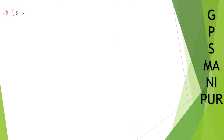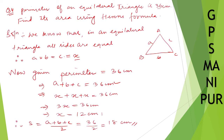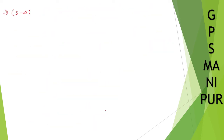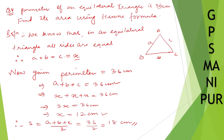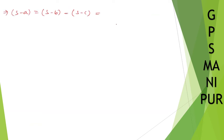Next we find s minus a, s minus b, and s minus c. Since a, b, and c are all 12 centimeters, s minus a equals s minus b equals s minus c, which equals 18 minus 12, that is 6 centimeters.